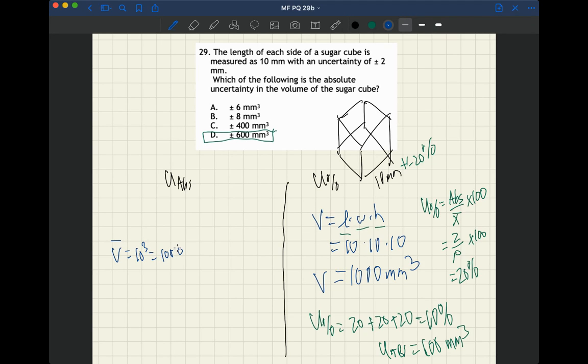We have an upper limit of the volume, which is going to be 12 cubed. And we have a lower limit, which is going to be 8 cubed. 8 cubed is 512. And 12 cubed is 1728.